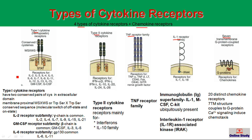The Type 1 cytokine receptor is also called the hematopoietin receptor because it also helps in hematopoiesis. This Type 1 cytokine receptor has two conserved pairs of cysteine in the extracellular domain — that means a total of four conserved cysteine residues are found in the extracellular domain.